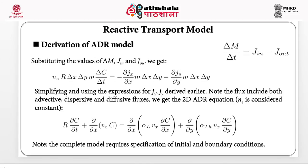Now that we have delta M, J_in, and J_out, it is time to put them together. When you combine these expressions, you will see that delta x, delta y, and m — that is, volume — appear on both sides of the equation and cancel out. Simplifying this expression gives the equation seen on screen. Again, if you want a detailed line-by-line derivation, please consult the accompanying text. The next step is to introduce the relation J_x, which we defined earlier as the combined advective, dispersive, and diffusive flux.